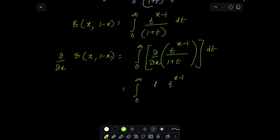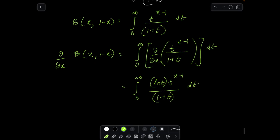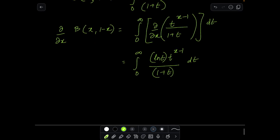So what will this become? This will become 0 to infinity, partial derivative of t to the power x minus 1 with respect to x will be t to the power x minus 1 ln t, so let me write ln t ahead of it, and 1 plus t is anyways a constant because you are partially differentiating with respect to x. So now what we see is that our expression has taken birth.